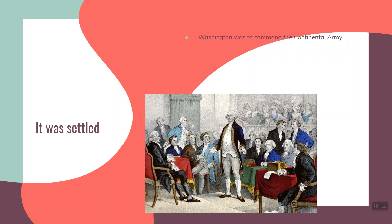Washington was to command the Continental Army, taking charge of the Massachusetts militiamen who were camped all around Boston. He headed north from Virginia toward Massachusetts to take command.